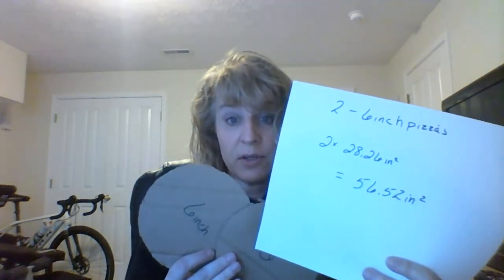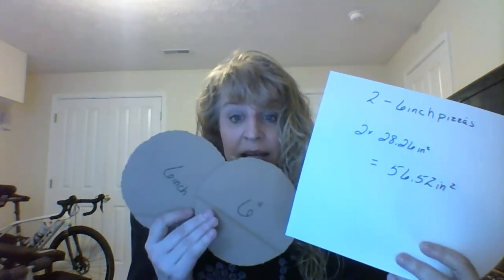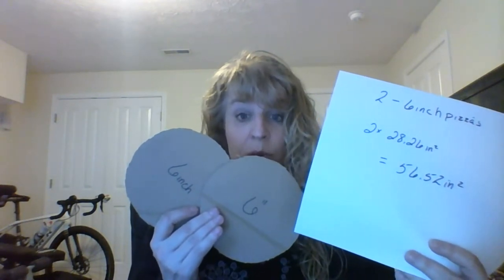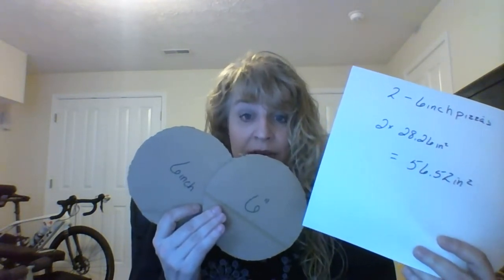Now, if I have two of them — which I do, two 6-inch pizzas — we multiply that by two, and this gives me an area of 56.52 square inches. That's our total area for two pizzas. So now we're going to look at my 12-inch pizza. Suddenly it seems a lot bigger when you're looking at it visually.